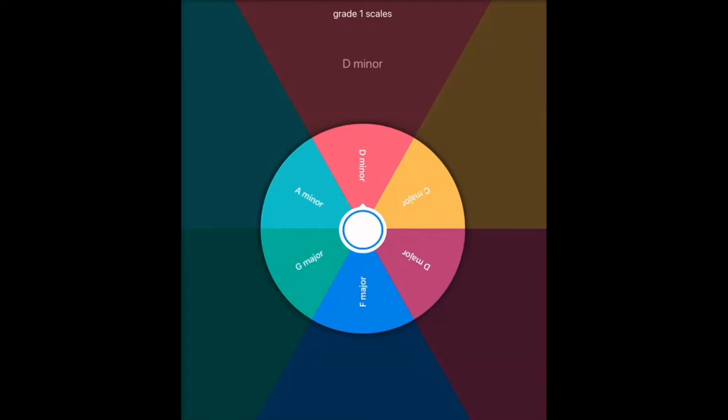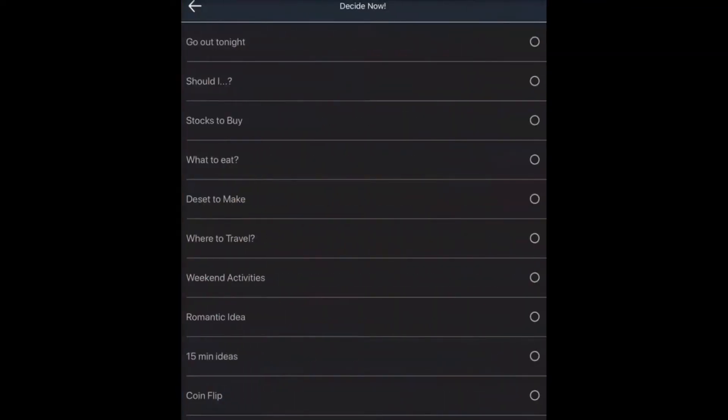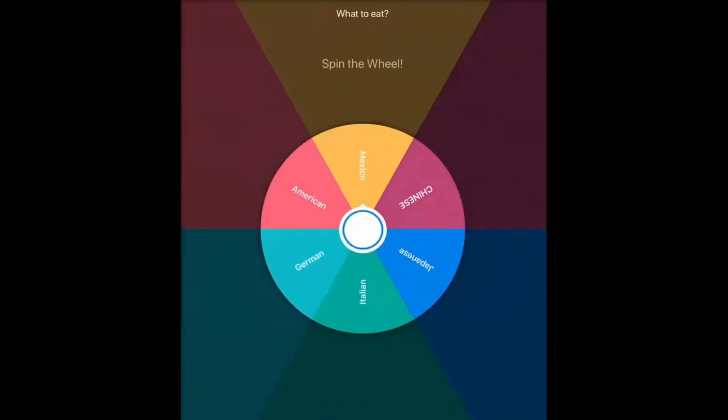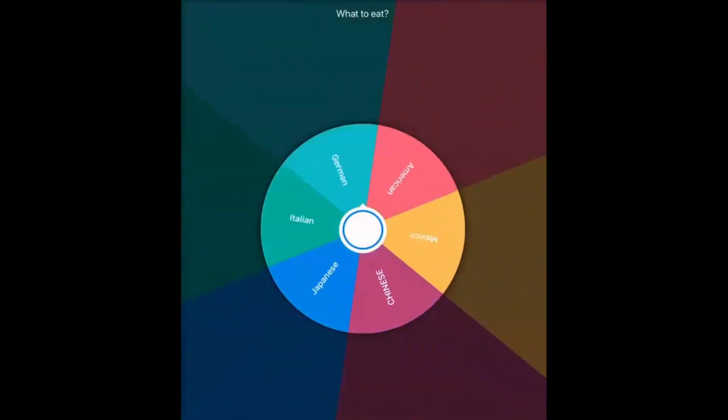And you can even use this app to decide where you should go, what should you eat. For example, let's try this one. What should you eat? Hey, so it's a Japanese cuisine. Yahoo!